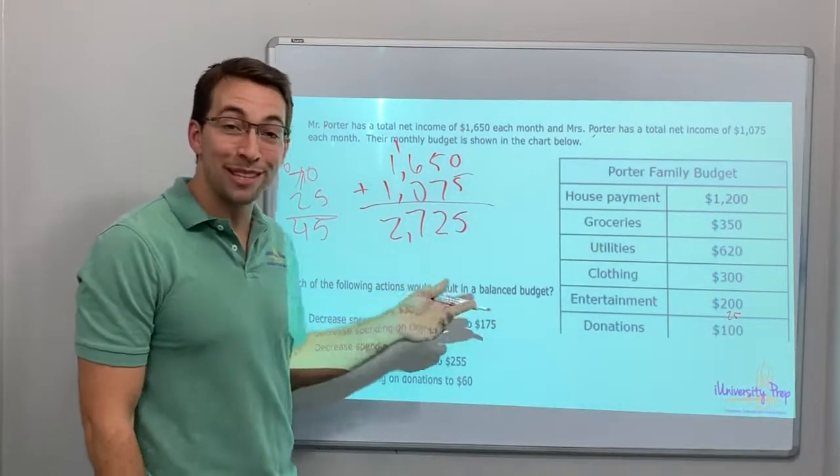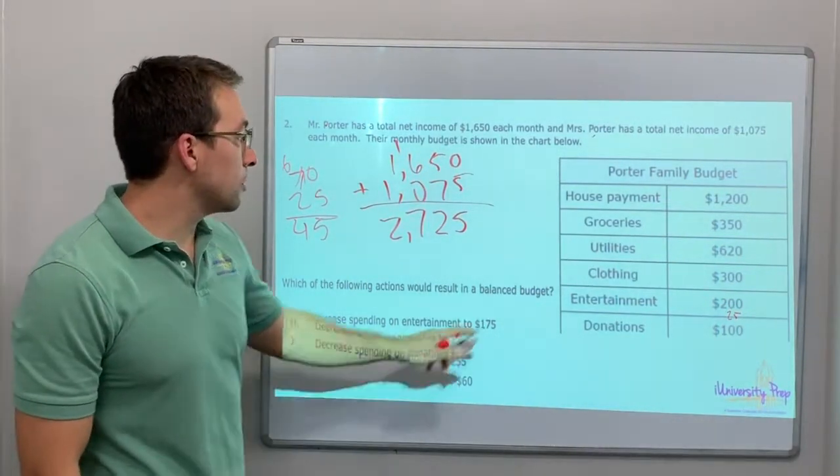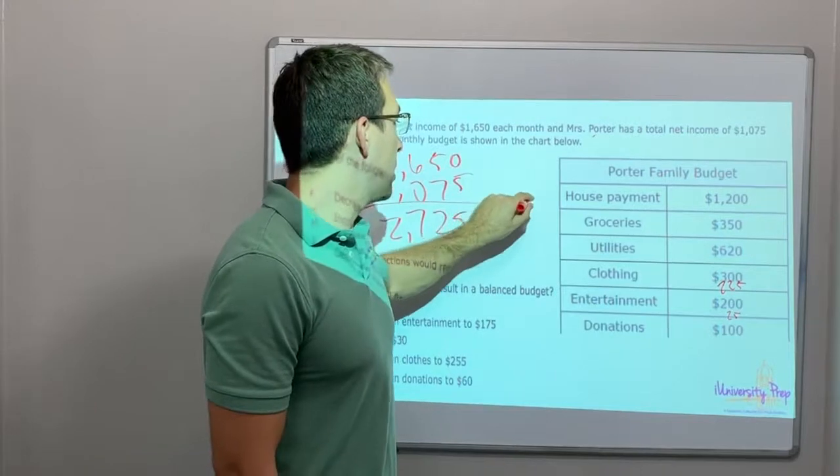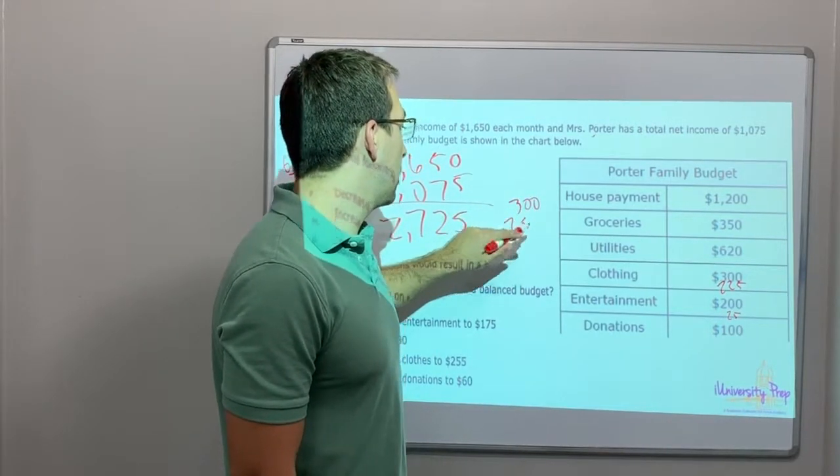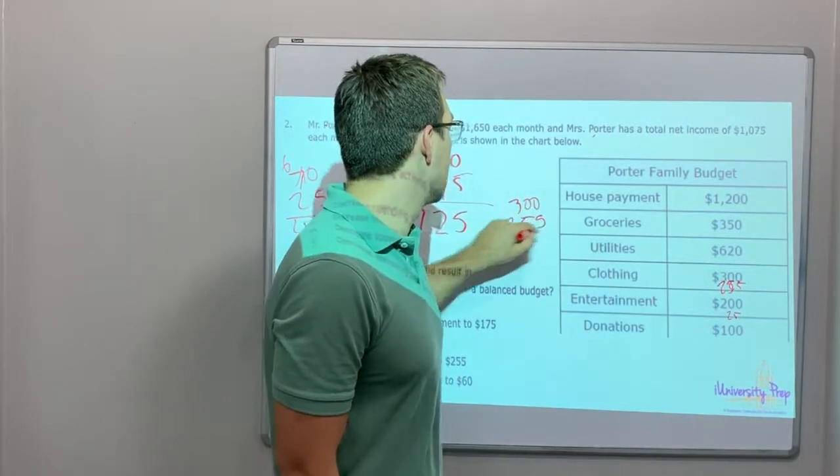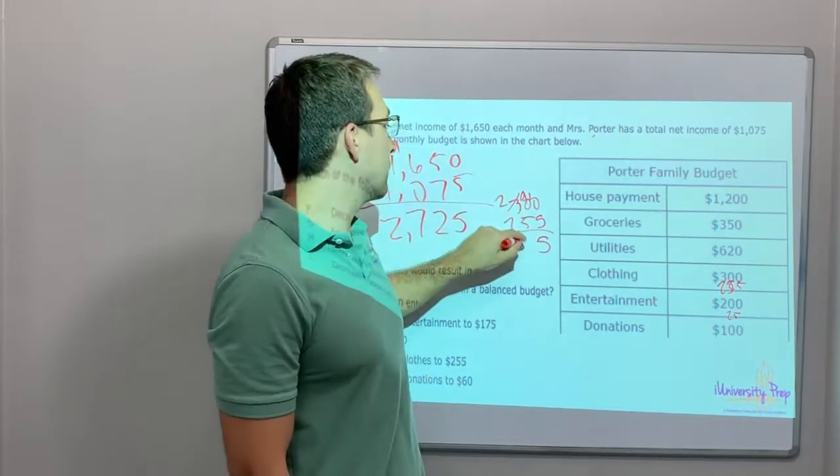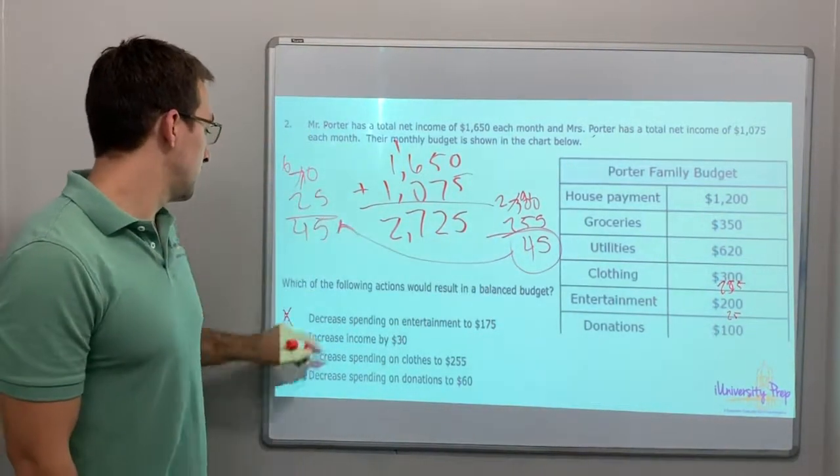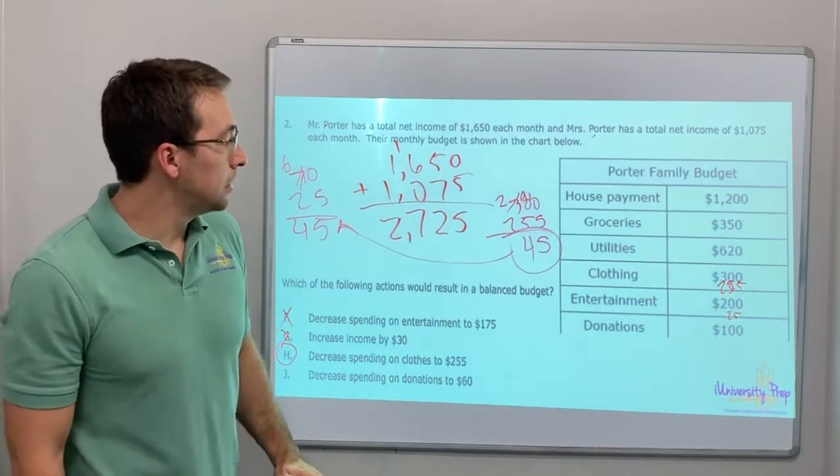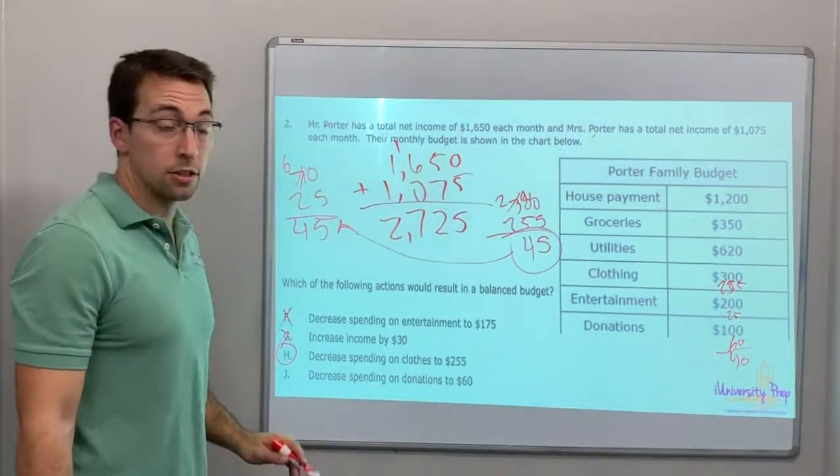Increase income? You could increase income, work more, right? But by $30, that doesn't work. Decrease spending on clothes to $225? Clothing... oh, that's it. $300 minus $225... borrow from the 3, that's 2, now 9 and 10. 10 minus 5 is 5, 9 minus 5 is 4. $45. Decrease spending on donations to $60? No, that's only $40. $100 minus $60 is $40, so that's not it. Answer is C.